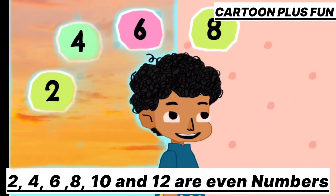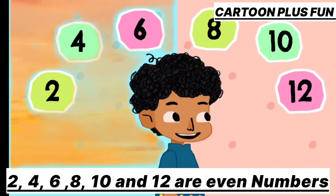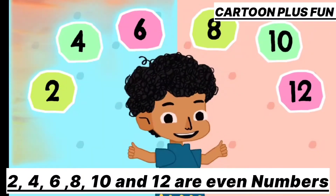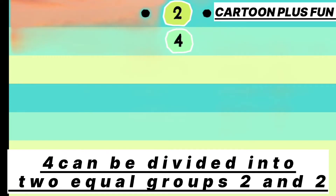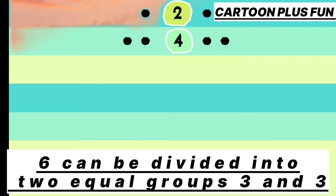8, 10, and 12 are all even numbers. Two can be divided into two equal groups: one and one. Four can be divided into two equal groups: two and two. Six can be divided into two equal groups.